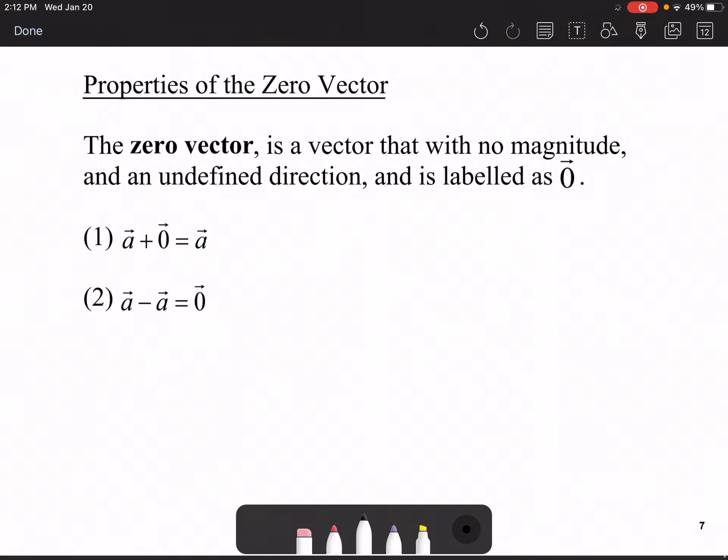I'd be a bad math teacher if I didn't mention the zero vector. The zero vector is a vector with no magnitude and undefined direction and is labeled as zero with a vector symbol on top of it. Some properties of this zero vector is if you did take any vector A and add it to the zero vector, which is just a point, doesn't go any further than where A was originally. Or likewise if you draw your vector A and then you draw your vector negative A on top of it, you go back to where you began. So you haven't moved anywhere. And that concludes lesson 6.2.